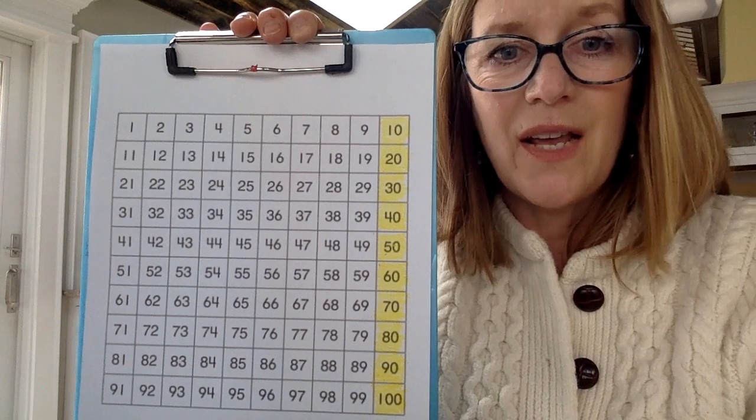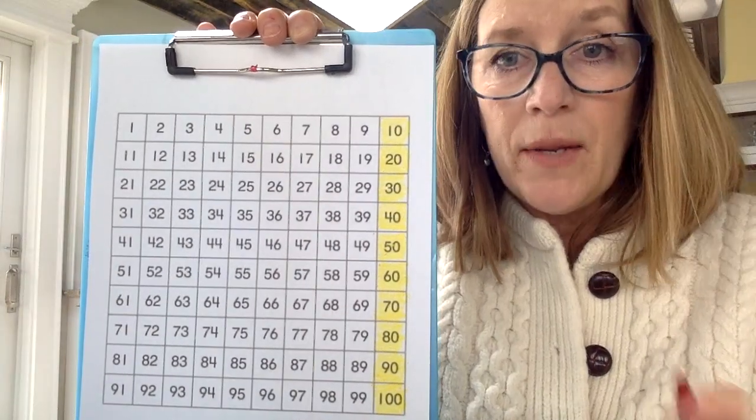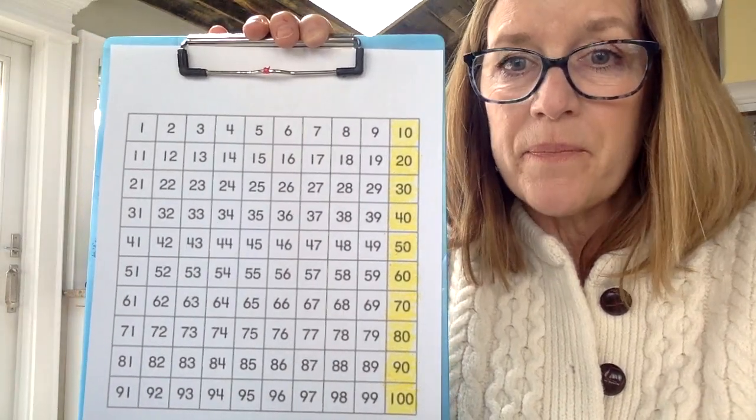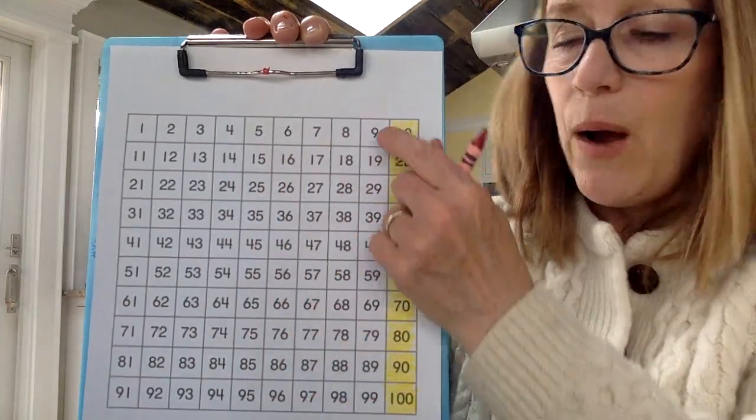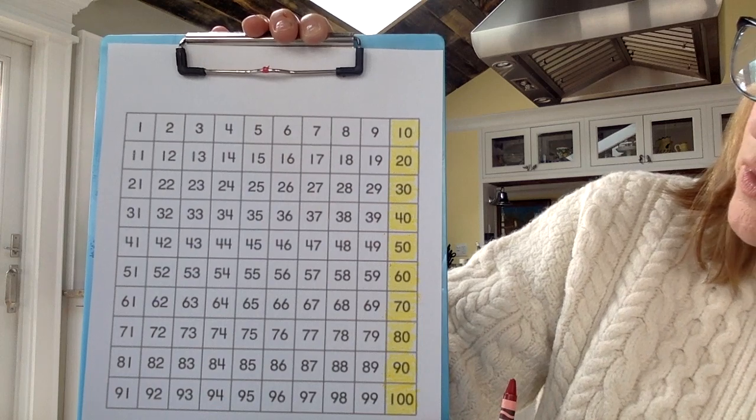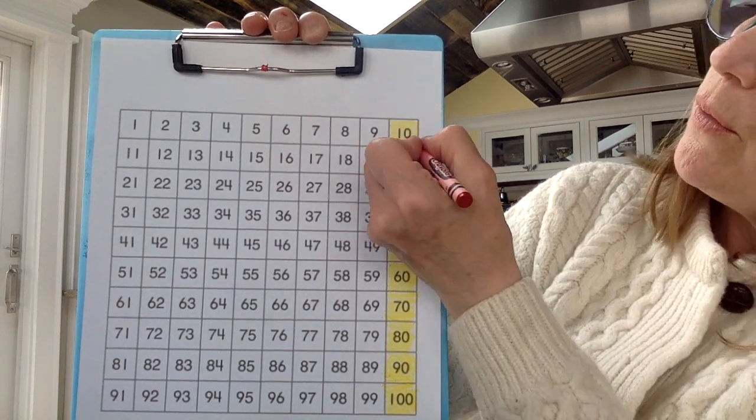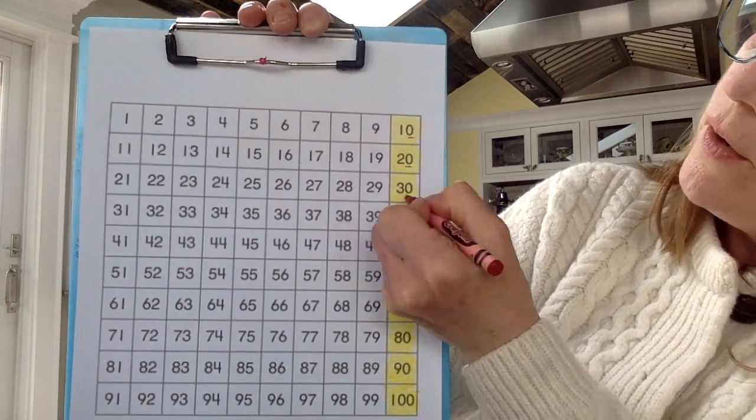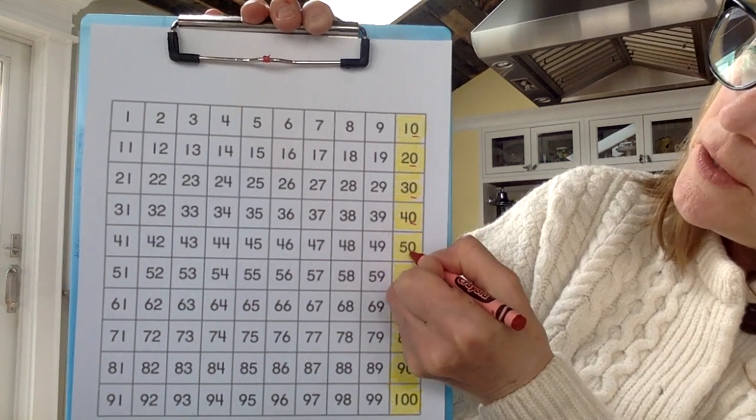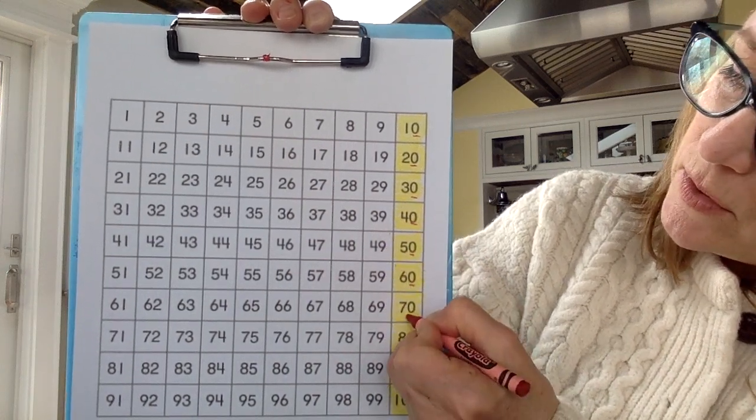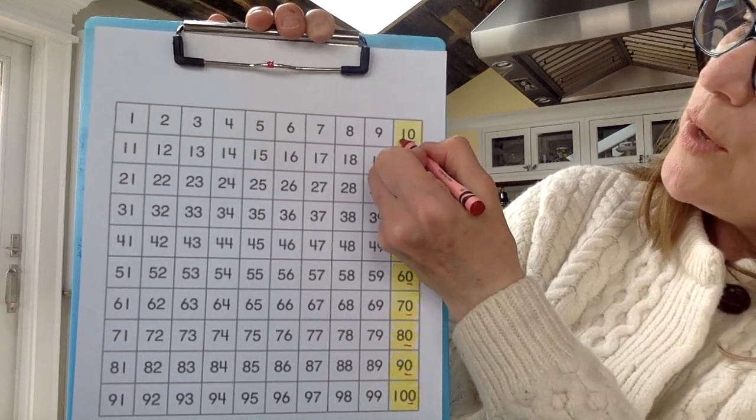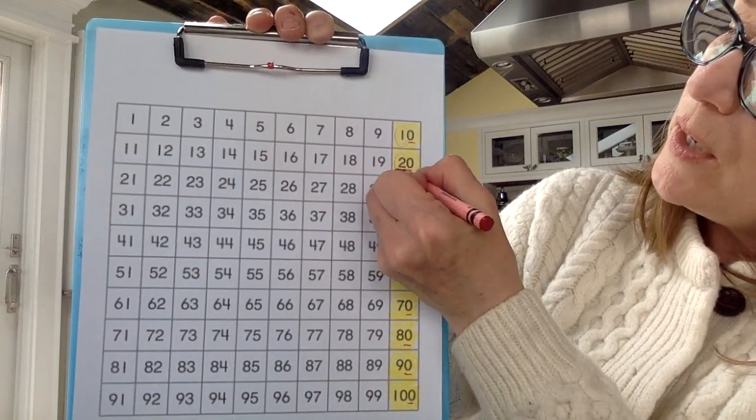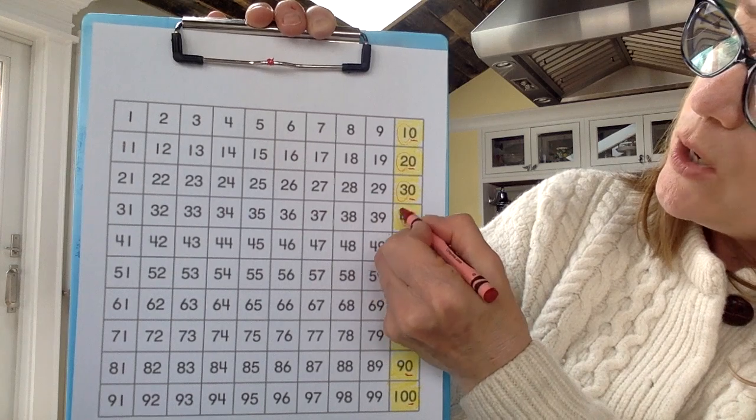Counting by fives is a lot of fun and you're going to notice that, well first of all take a look at what happens with these numbers. What do you notice about the ending? There's a zero at the end of each of these numbers. That's a pattern.